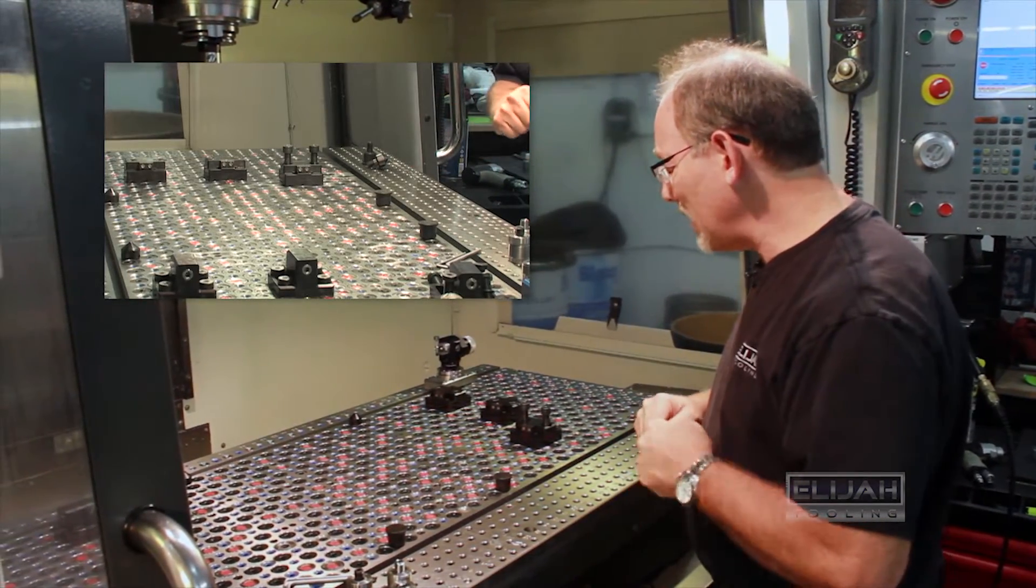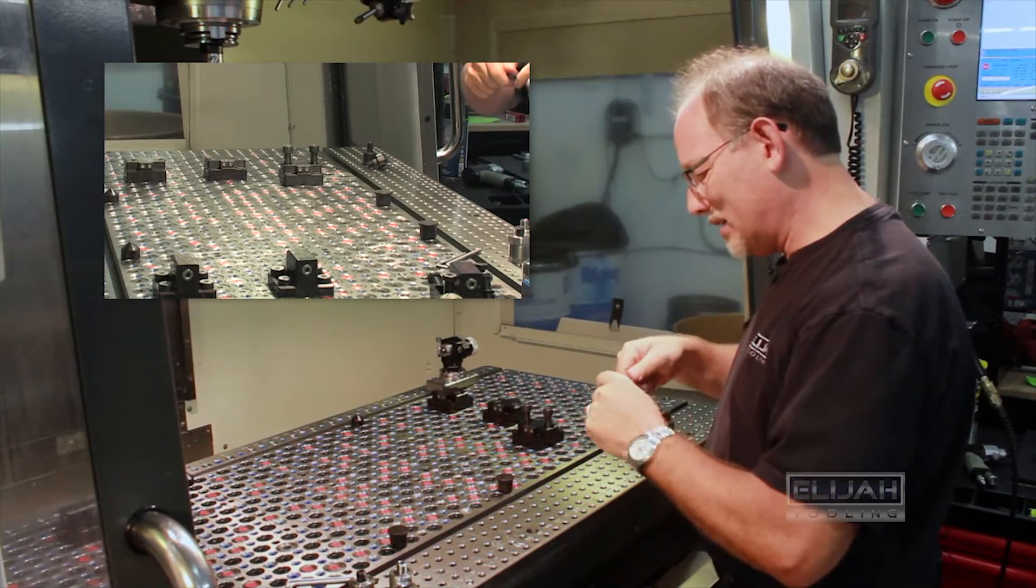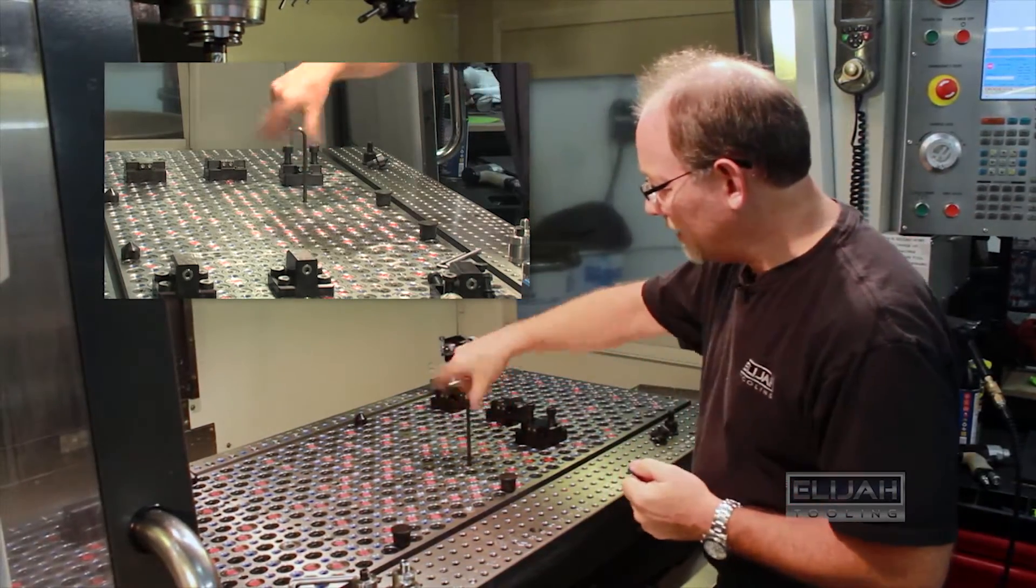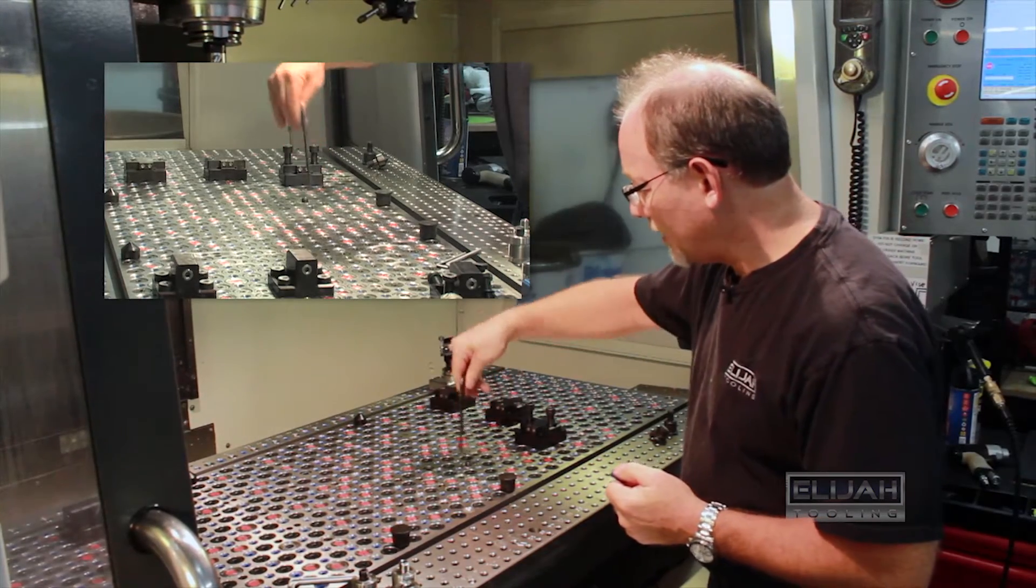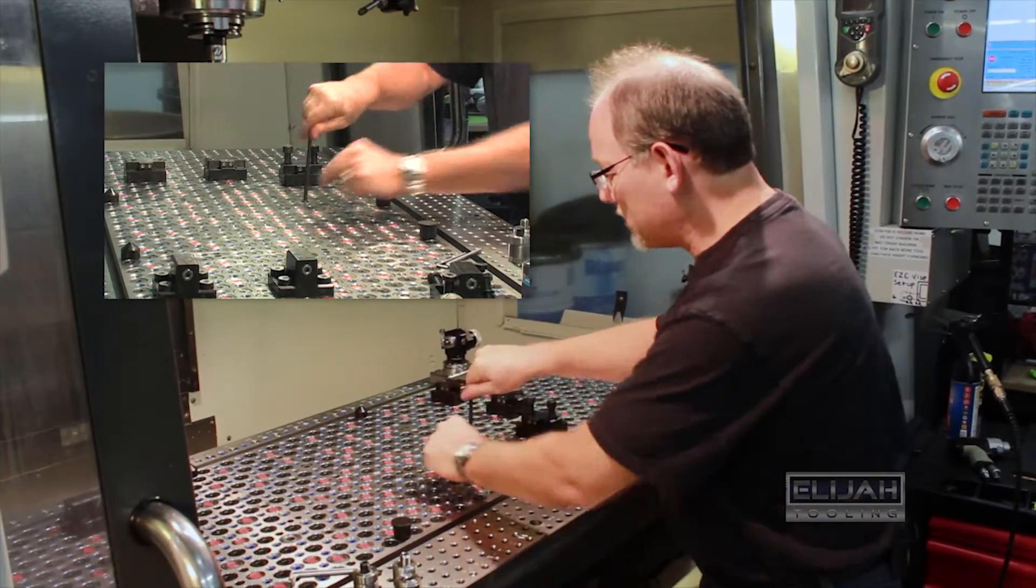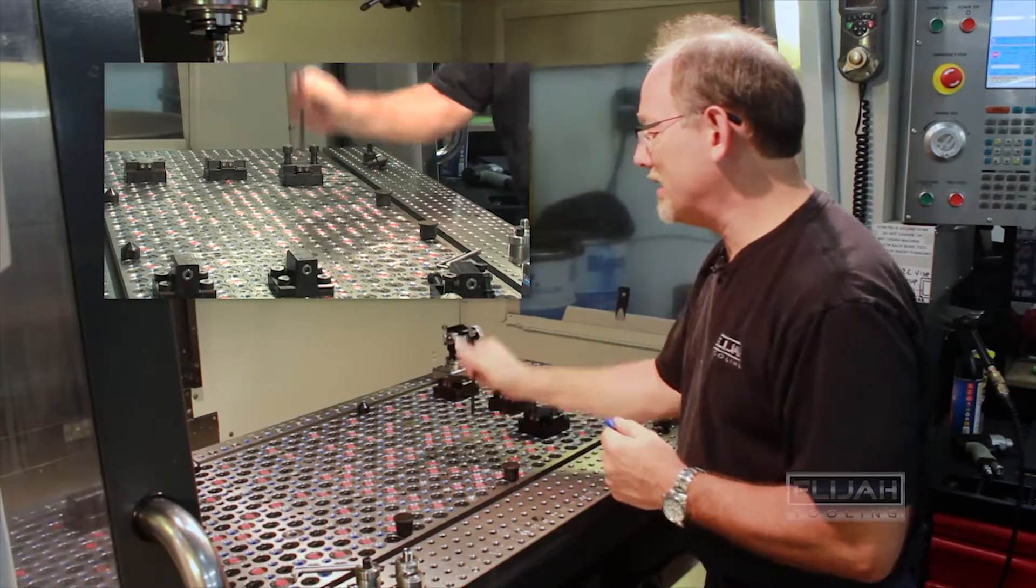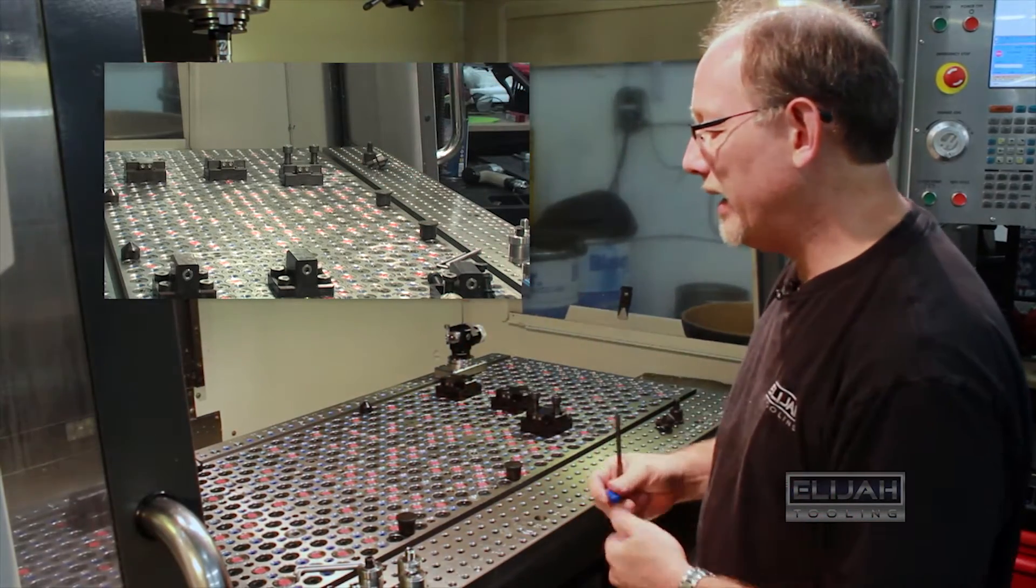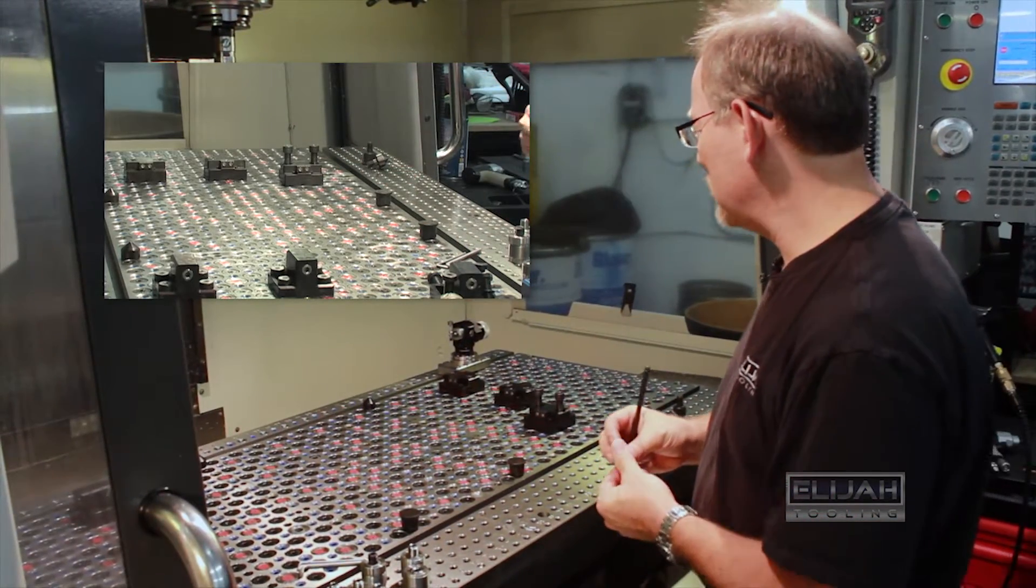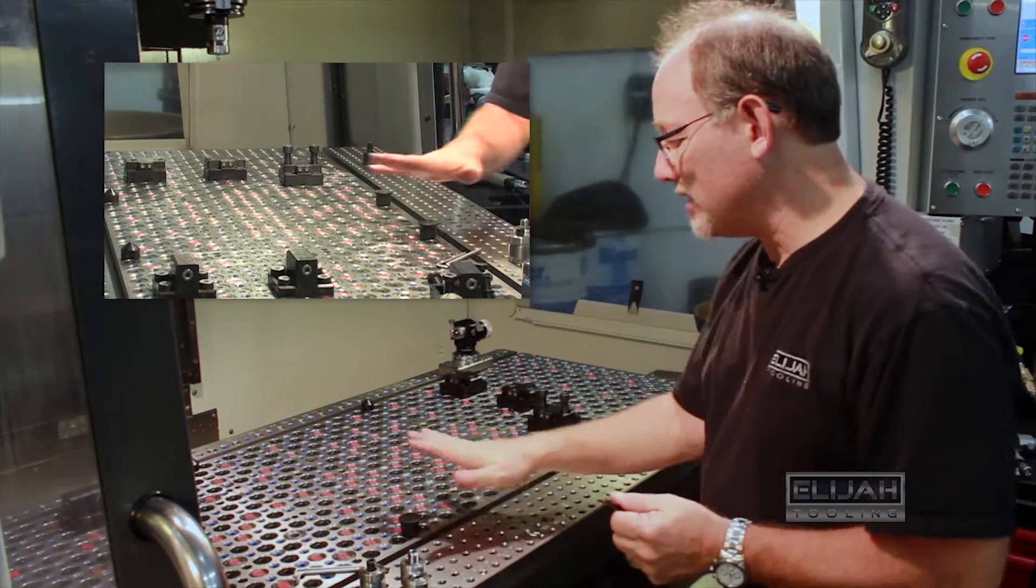For right now you can see that we have a number of different fasteners on this table—the precision locator that we described before right here, and then you can see all these little red caps. Those are fasteners. They're all there ready to come up and be used whenever and as we wish them to.